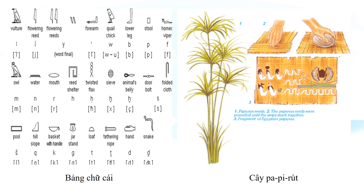Bên cạnh đó, cây Papyrus còn có thể được dệt làm dây thừng, lưới đánh cá, thậm chí là thuyền hoặc các chi tiết trang trí trên thuyền. Tại các hộ gia đình thì cây Papyrus có thể được dùng để làm củi đun nấu hoặc đan thành các vật dụng hằng ngày như túi đựng, chai nước, làm ca, chậu, hoặc có thể làm những đôi giày dép.